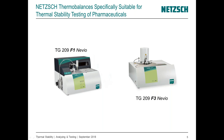Our TG 209 F1 Nevio has two magazines for samples because it features automatic sample changing — you can see the gripper here. The balance is underneath, and the furnace is in this position with its cover removed for sample exchange. There is another balance system, the TG 209 F3 Nevio, which is a workhorse for applications up to 1000°C, whereas the TG 209 F1 goes up to 1100°C, which is far enough for organic matter, food, polymers, and pharmaceutical applications.